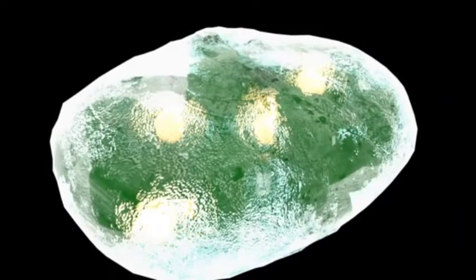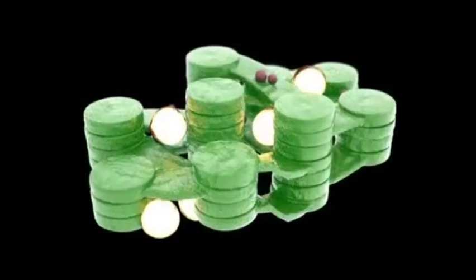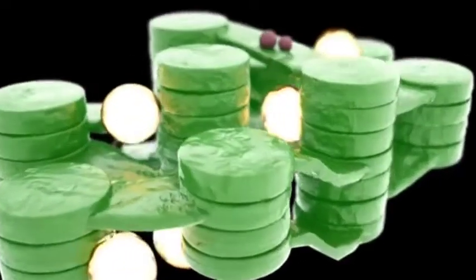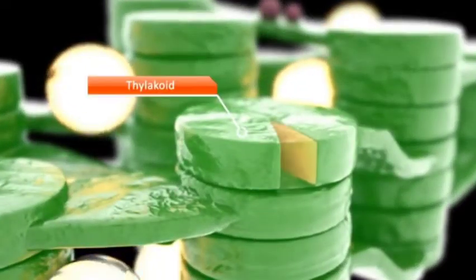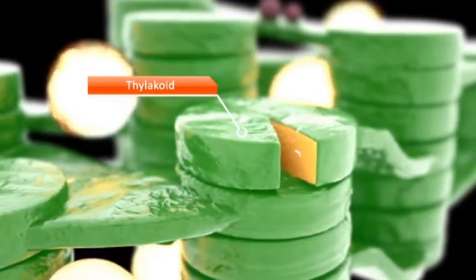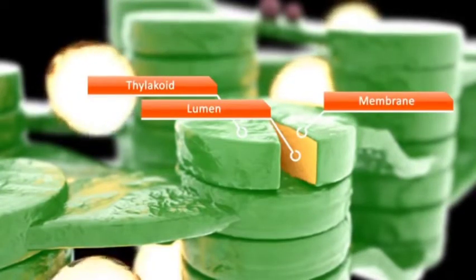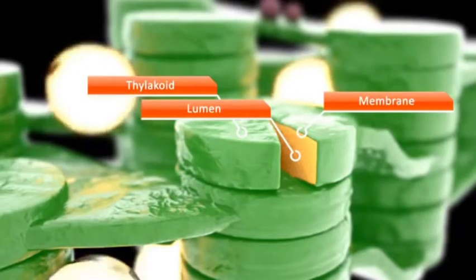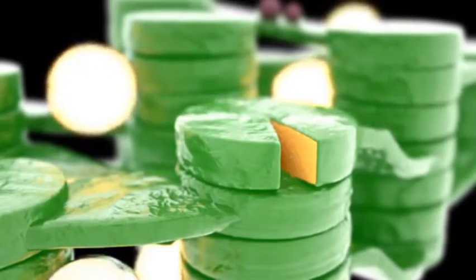Chloroplasts have a protective membrane. A liquid called stroma is found inside the chloroplast. Thylakoids are embedded in this liquid. Thylakoids consist of a thylakoid lumen surrounded by a membrane where photosynthesis takes place.